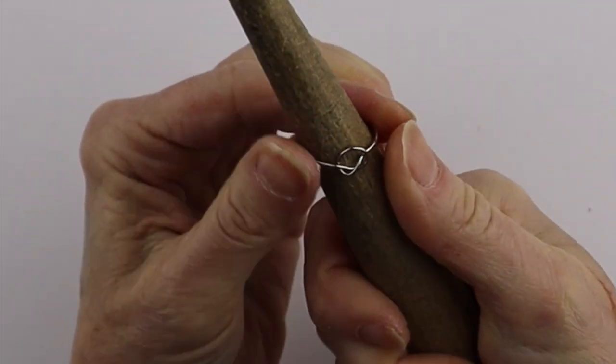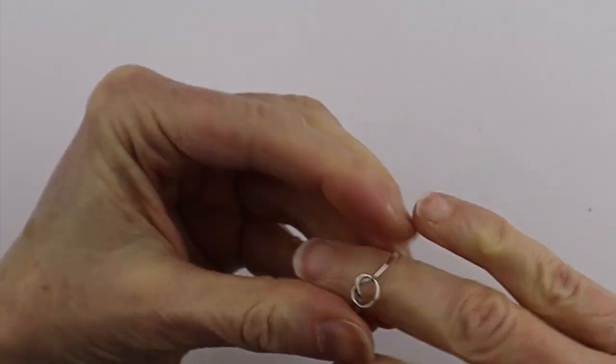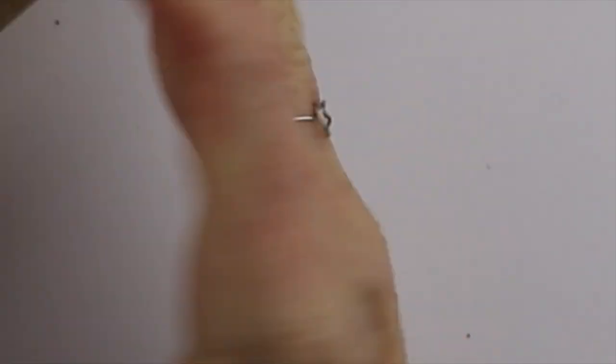Put it back on the ring cone. And there you have your very funky little knot ring.